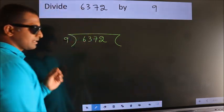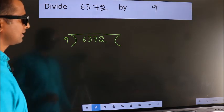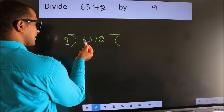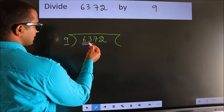This is your step 1. Next. Here we have 6. Here 9. 6 smaller than 9. So, we should take two numbers, 63.